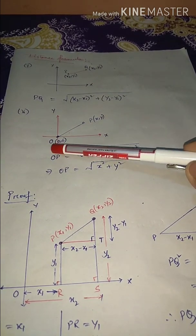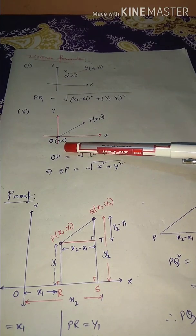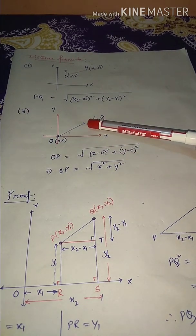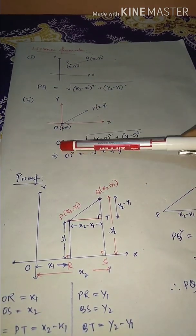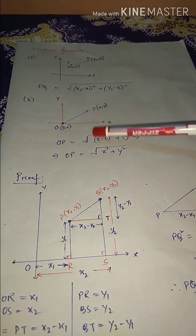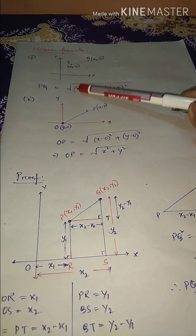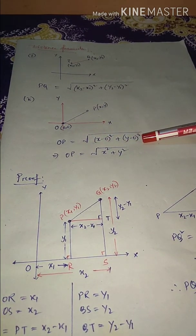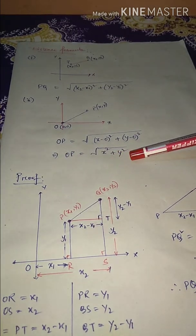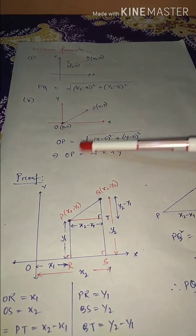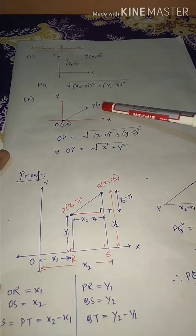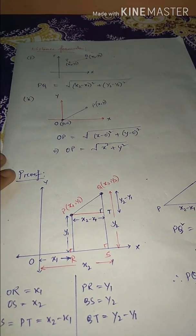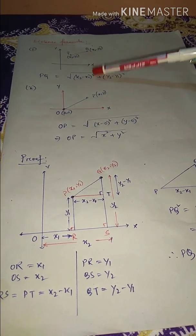As a special case, if one point is the origin O with coordinate (0, 0) and the other point is P(x, y), then the distance OP is found using the same formula. Substituting, we get OP = √[(x − 0)² + (y − 0)²] = √(x² + y²). So if asked to find the distance from the origin to any point P(x, y), you can directly write √(x² + y²).